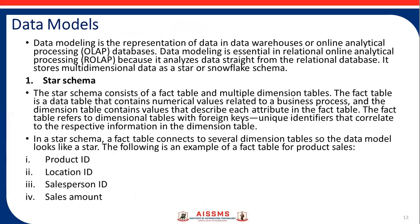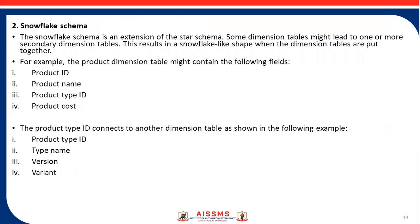These are some data models. The first one is the Star Schema, in which a fact table for product sales contains product ID, location ID, salesperson ID, and sales amount ID. The second is the Snowflake Schema, which is an extension of the star schema where some dimension tables may link to one or more secondary dimension tables, resulting in a snowflake-like shape when the dimension tables are put together.